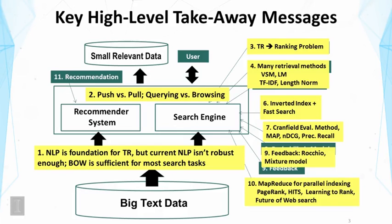We then talked about web search. We talked about how to use parallel indexing to solve the scalability issue in indexing, and we introduced MapReduce. We then talked about how to use link information on the web to improve search, covering PageRank and HITS as the major algorithms to analyze links on the web.